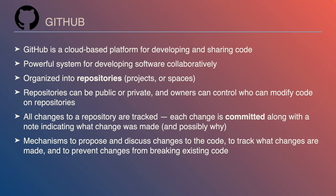GitHub also has mechanisms to propose and discuss changes to the code, track what changes are made, and prevent changes from breaking existing code. When multiple people are contributing, different people might suggest how to fix a bug, find a bug and report it, or have ideas for changes. GitHub allows you to have essentially a message board specific to each idea where discussions can happen and be linked to the code itself.